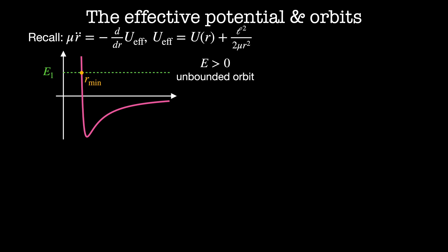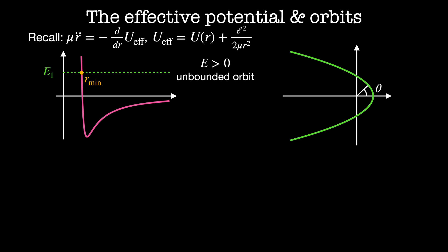Solutions like this are called scattering states. Starting far away from the origin, the particle has mostly kinetic energy, then slowly moves up the potential energy well, trading kinetic energy for potential energy. It reaches the minimum radius where it has all potential energy and no kinetic energy, then turns around and heads back away from the origin.